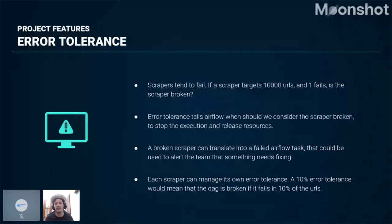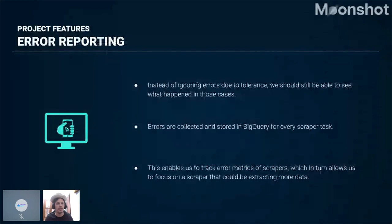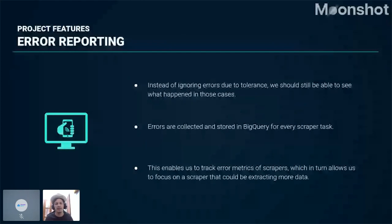Broken scrapers mean failed tasks in Airflow, meaning resources are released. The next feature related to error tolerance is error reporting. When we have error tolerance, we allow some errors without stopping execution, but we still want to store and track those errors. Instead of ignoring them, we collect and store these errors in BigQuery for every scraper task, enabling us to track error metrics and focus on scrapers that could extract more data or need fixing.